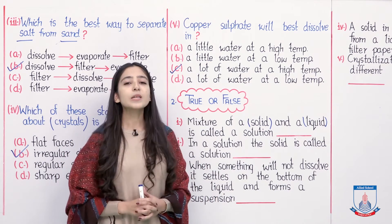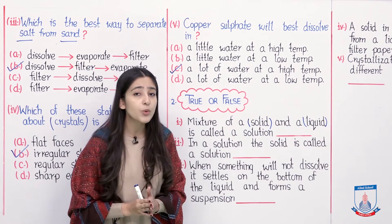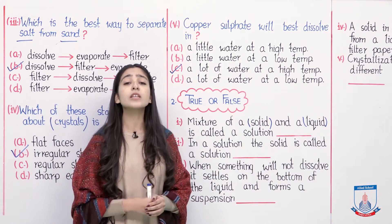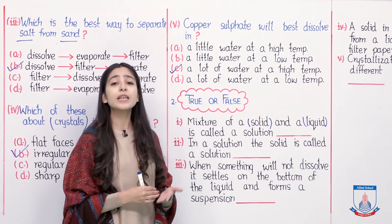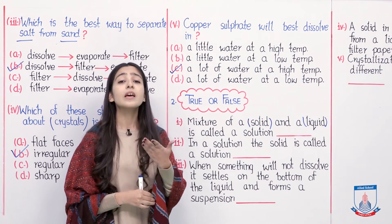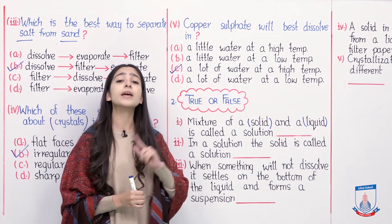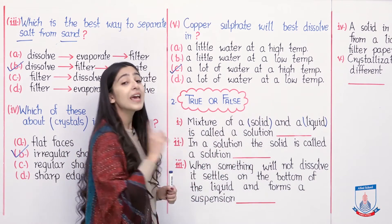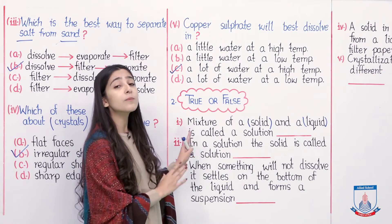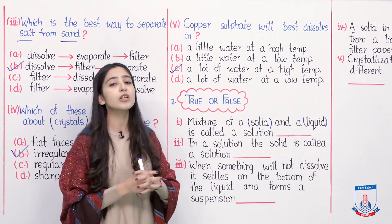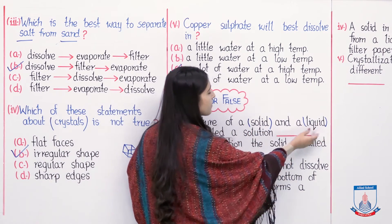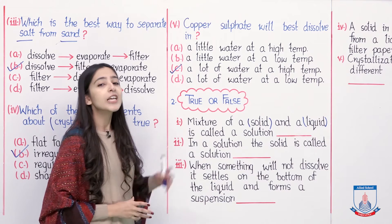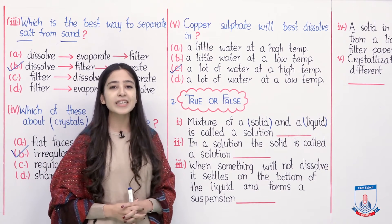Solid particles can be dissolved in liquid, gases can be dissolved in liquid, and liquid can be dissolved in liquid — all of these are called solutions. So the definition that a mixture of a solid and a liquid is called a solution is incomplete and incorrect as a complete definition. Statement number 1 is therefore false.